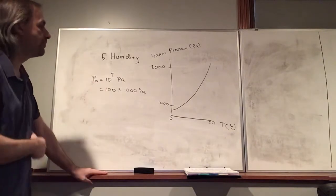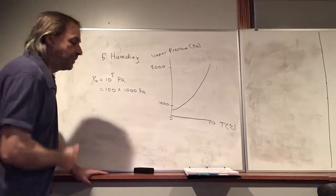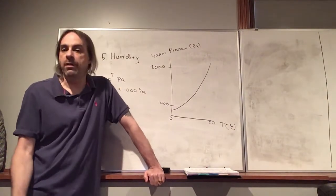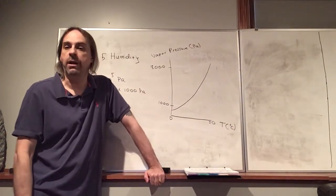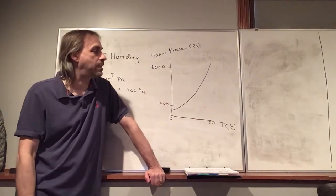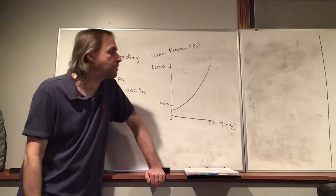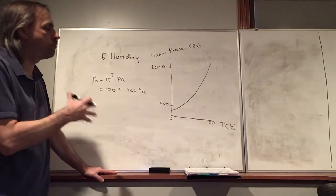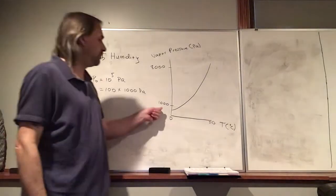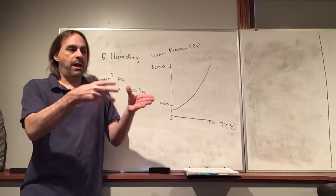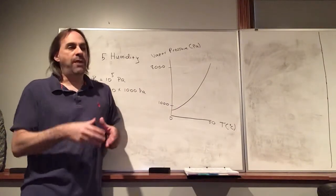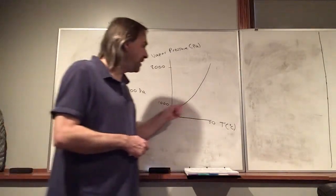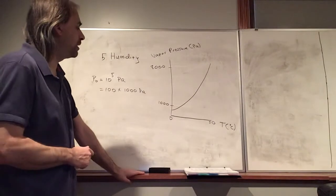Atmospheric pressure includes oxygen, nitrogen, and water vapor as the main components of ordinary air, plus trace gases like carbon dioxide or carbon monoxide. That's called partial pressure. So if you look at the partial pressure of water vapor — if you removed everything else and just left those water vapor molecules, that would be the pressure we're measuring. This is the vaporization curve for water vapor, as a function of temperature.